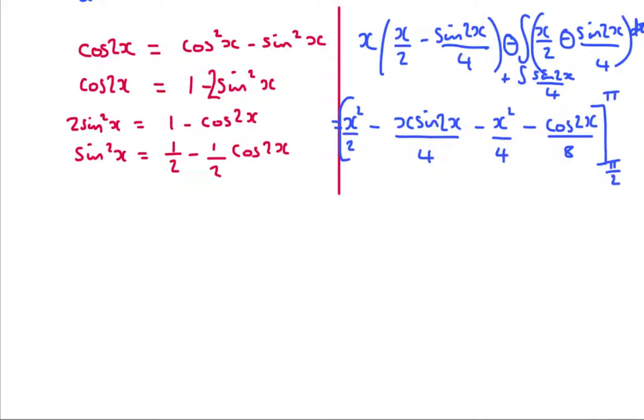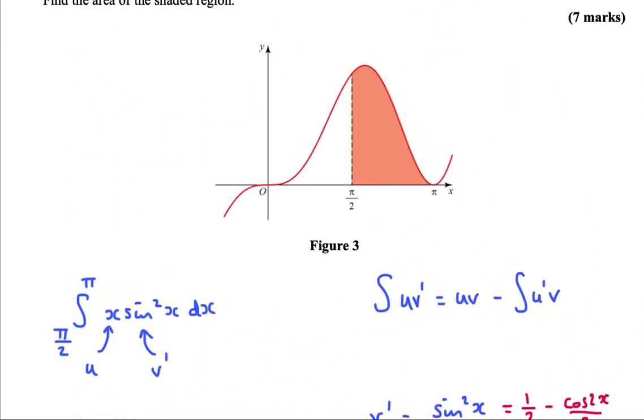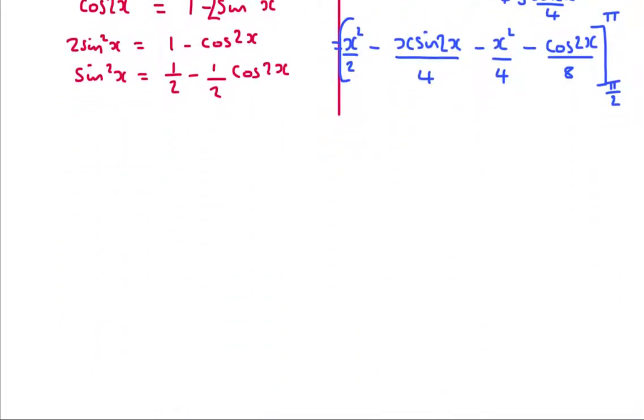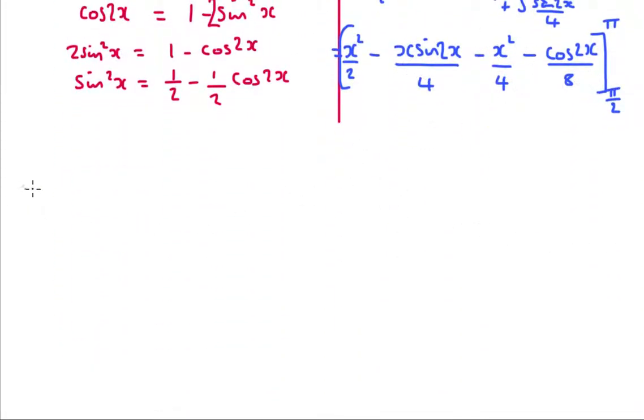Right, that's all been integrated now at least, and we've just got to put our limits in, which I believe was pi over 2 and pi. Yeah, so, substituting pi in, we're going to get pi squared over 2, sine of 2 pi is 0, so that bit is going to be 0. This is going to be pi squared over 4, and cos of 2 pi, if you think about the graph, is 1, so we're taking away an 8 here.